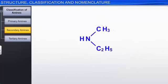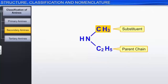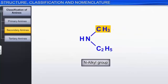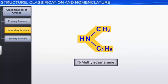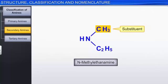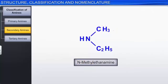If the nitrogen atom has two alkyl groups with different numbers of carbon atoms, then the alkyl group with the fewer carbon atoms should be treated as the substituent and prefixed as N-alkyl group. For example, in CH₃NHC₂H₅, the CH₃ group is considered the substituent and is prefixed as N-methyl. Thus, the name of the compound is N-methyl ethanamine.